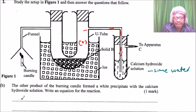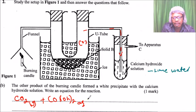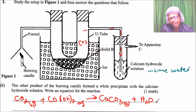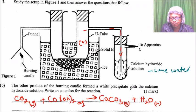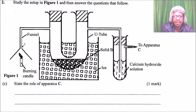The equation is: CO₂(g) + Ca(OH)₂(aq) → CaCO₃(s) + H₂O(l). Calcium carbonate is the solid white precipitate formed, plus water as a liquid. That is the equation for carbon dioxide reacting with lime water or calcium hydroxide.